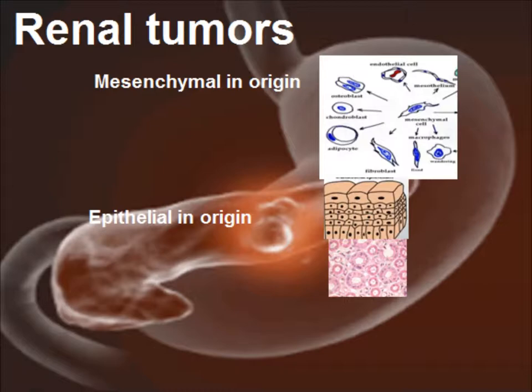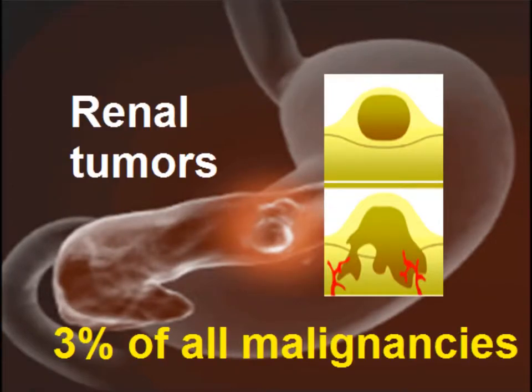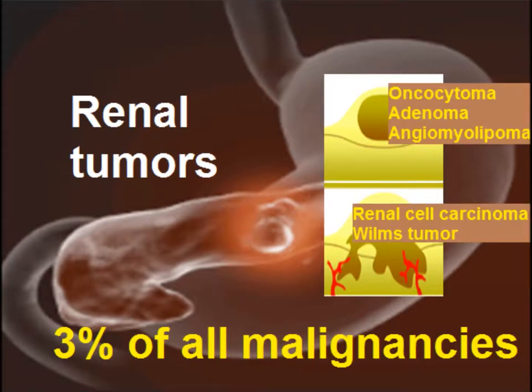About three percent of all malignancies are renal in origin. Benign renal tumors are commonly oncocytoma, adenoma, and angiomyolipoma. Malignant ones are renal cell carcinoma in adults and Wilms tumor in childhood.